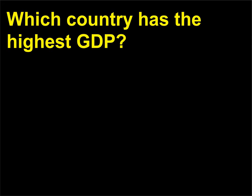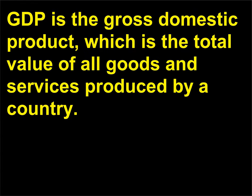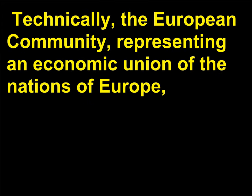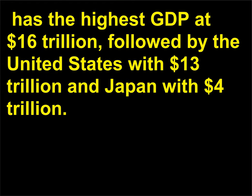Which country has the highest GDP? GDP is the gross domestic product, which is the total value of all goods and services produced by a country. Technically, the European community, representing an economic union of the nations of Europe, has the highest GDP at $16 trillion, followed by the United States with $13 trillion and Japan with $4 trillion.